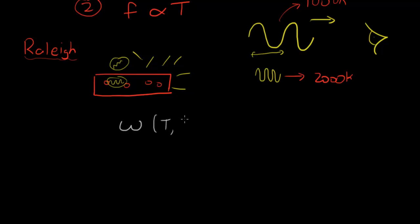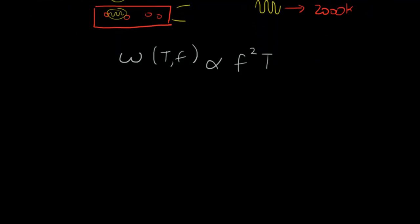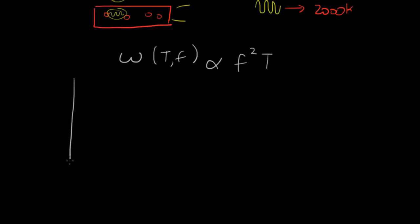That the intensity, written as a function of temperature and frequency, was proportional to the frequency squared times temperature. You don't really need to memorize this formula. All this is saying is that if we plotted it on a graph, where on the y-axis we have intensity and on the x-axis we have wavelength.